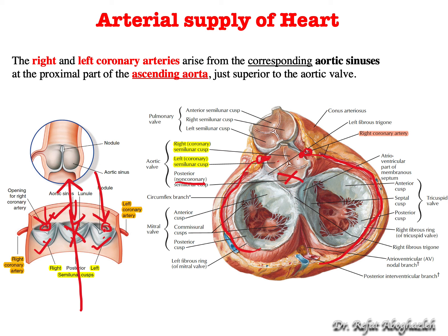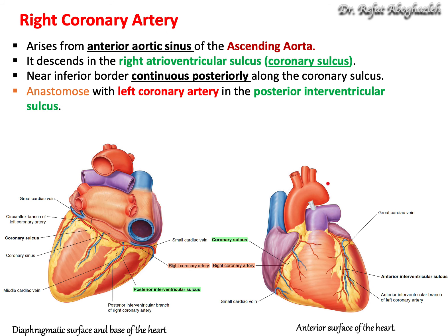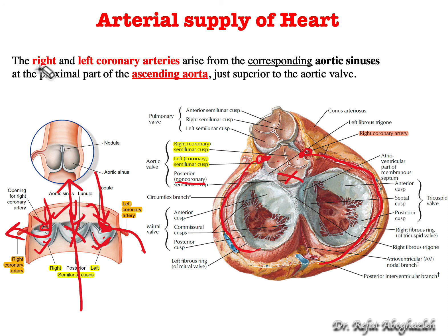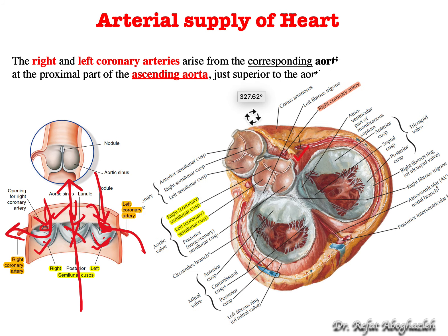Once blood is ejected from the left ventricle to the aorta, the cusps — because of pressure differences — fill when the blood tries to return, shutting the valve. The engorgement of blood drains into the coronary arteries through these cusps. The right coronary artery arises from the anterior aortic sinus.